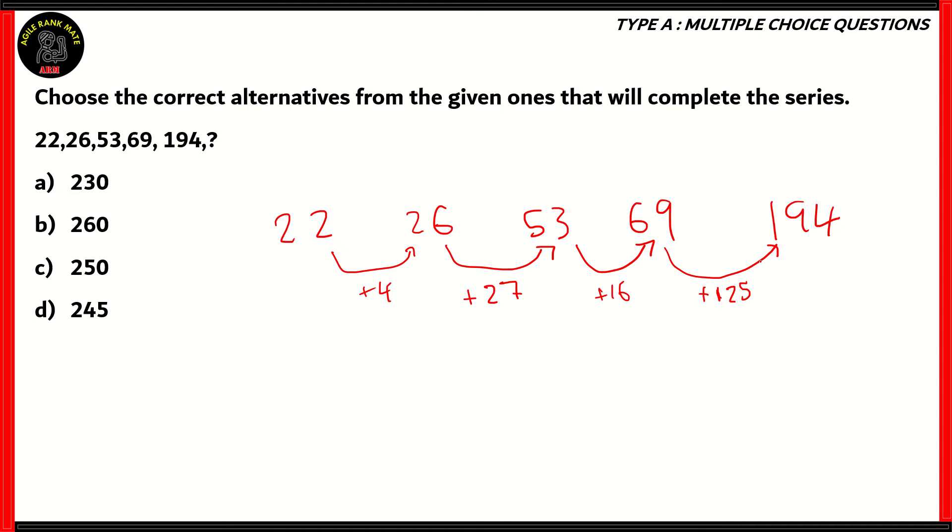So what's in common among all these numbers? If you look at the differences, the first difference, 4 is 2 squared. 27 happens to be 3 cubed. 16 happens to be 2 raised to 4, but it's also 4 raised to 2. 125 also happens to be 5 cubed.